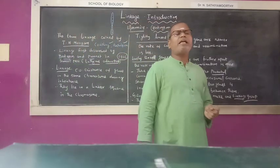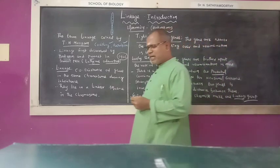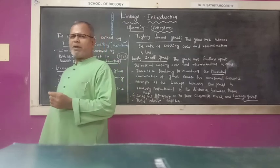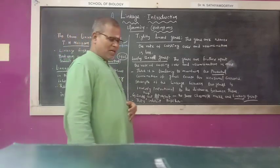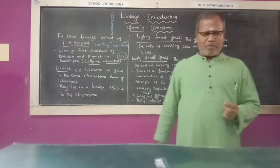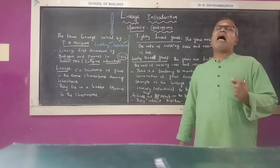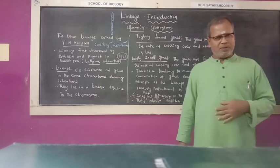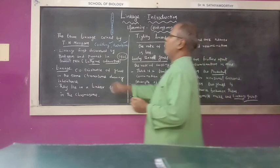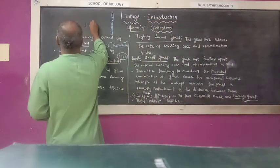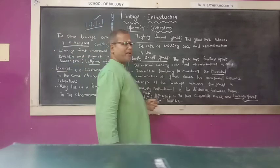Linkage is against the law of independent assortment. According to Mendel, the dihybrid test cross ratio should be 1:2:1 in all organisms due to the law of independent assortment.